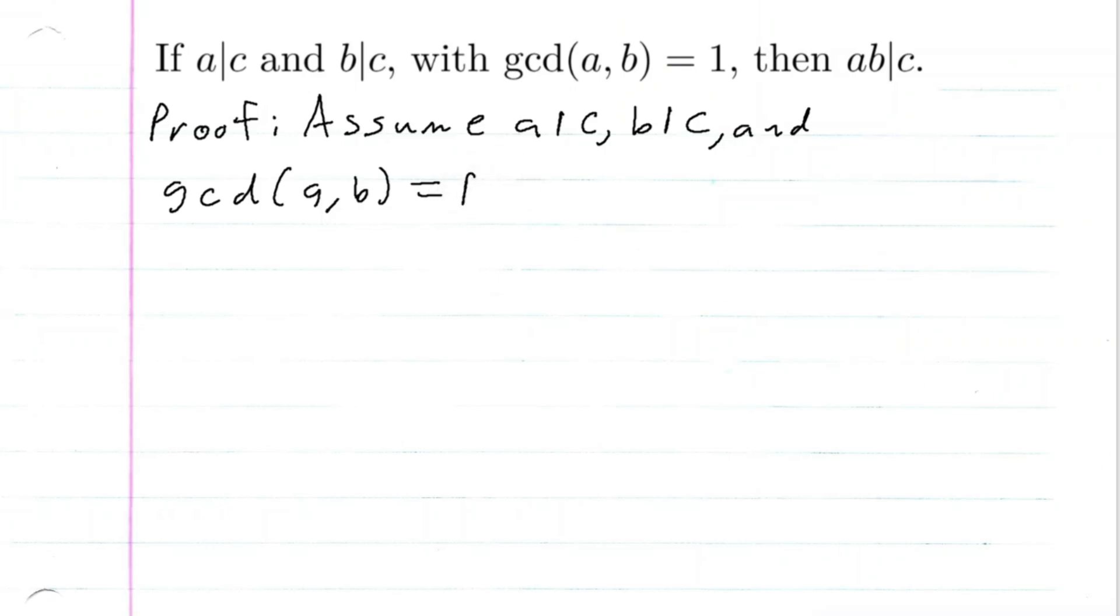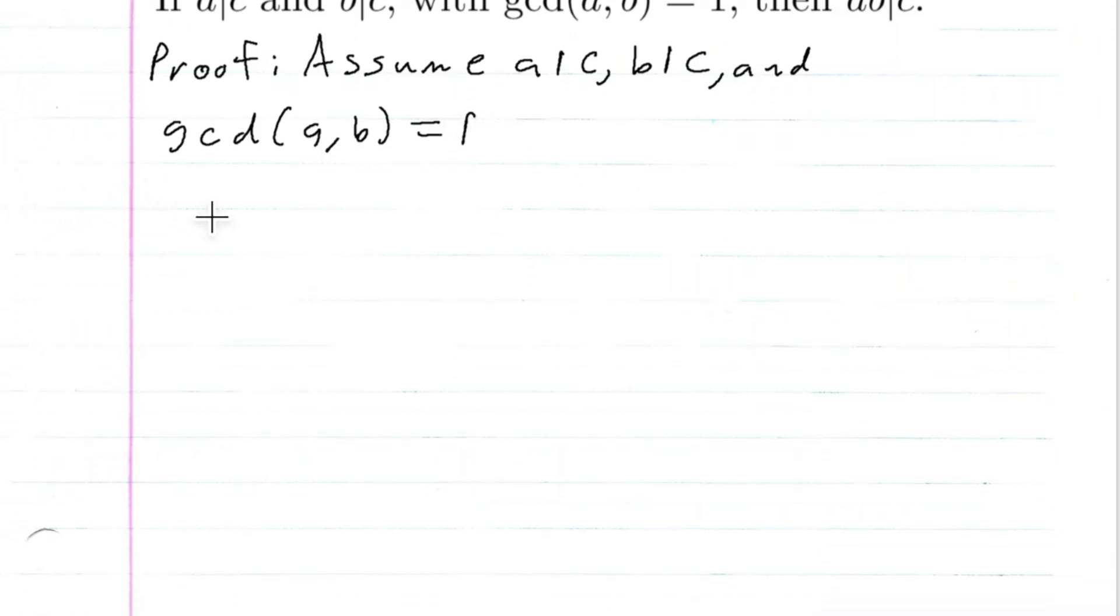All right, well, let's go down a little bit. A divides C implies that C is equal to AK, where K is some integer. B divides C implies that C is equal to BQ, where Q is some integer.